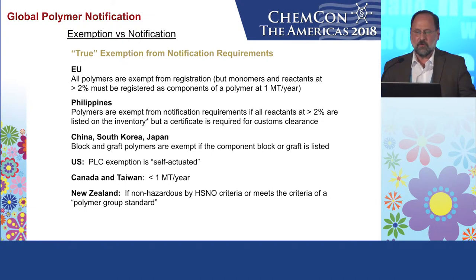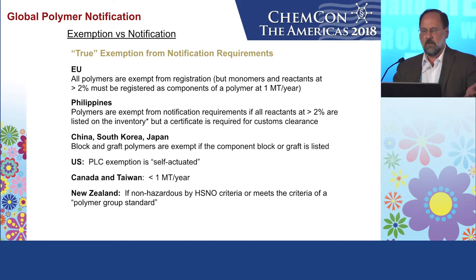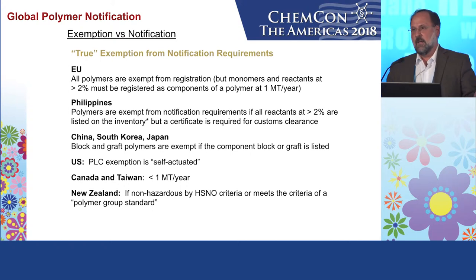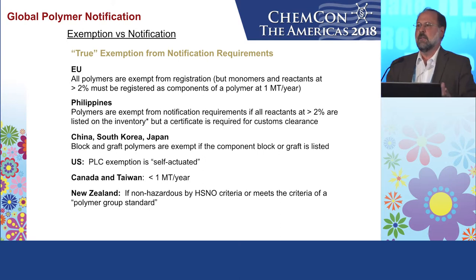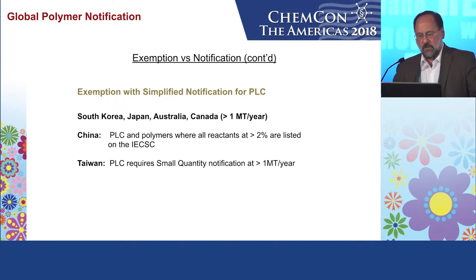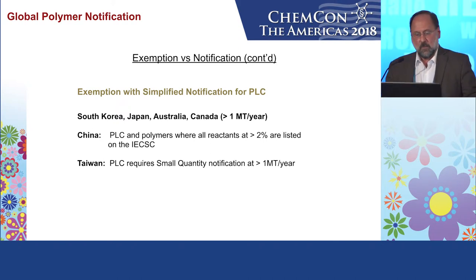On exemption versus notification: the EU has a true exemption for the polymer, but you have to register the monomers present at greater than 2% at greater than one metric ton per year. In the Philippines, all polymers are exempt if all reactants greater than 2% are listed on the inventory, although a certificate is required for customs clearance. In the US, the exemption is self-actuated — you just take it. In Canada and Taiwan, if you're under one metric ton per year, you don't have to do anything. New Zealand, if you're non-hazardous or meet the criteria of a polymer group standard, no notification is required.